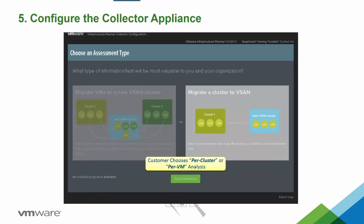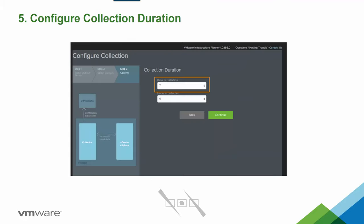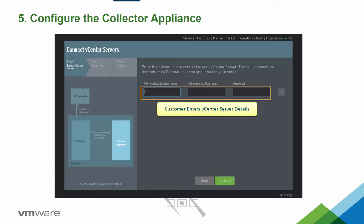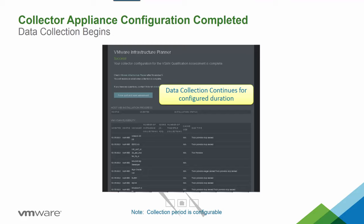If they're only looking to assess a specific environment — say they have an infrastructure environment and a VDI environment and want to focus on just VDI — they can select that specific cluster. During the install, they'll be asked how many days to run the collection: the minimum is seven days, which gives solid analysis data. The customer then inputs their vCenter server FQDN and the associated administrative username and password. The appliance is then configured, starts collecting data for the selected duration, and sends it to the portal.